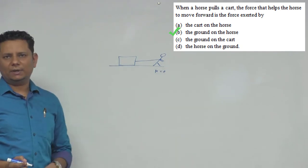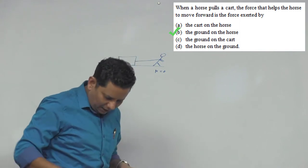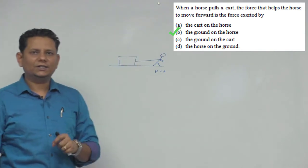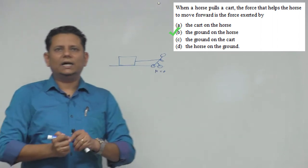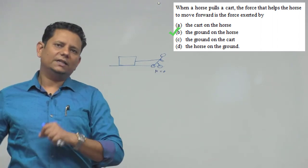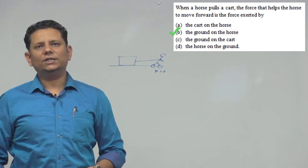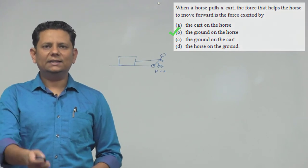So this force will not be able to get the horse, so this force will be able to get the horse. So this force will help you. So here we have an option, ground on the horse, so option number B is the right answer.